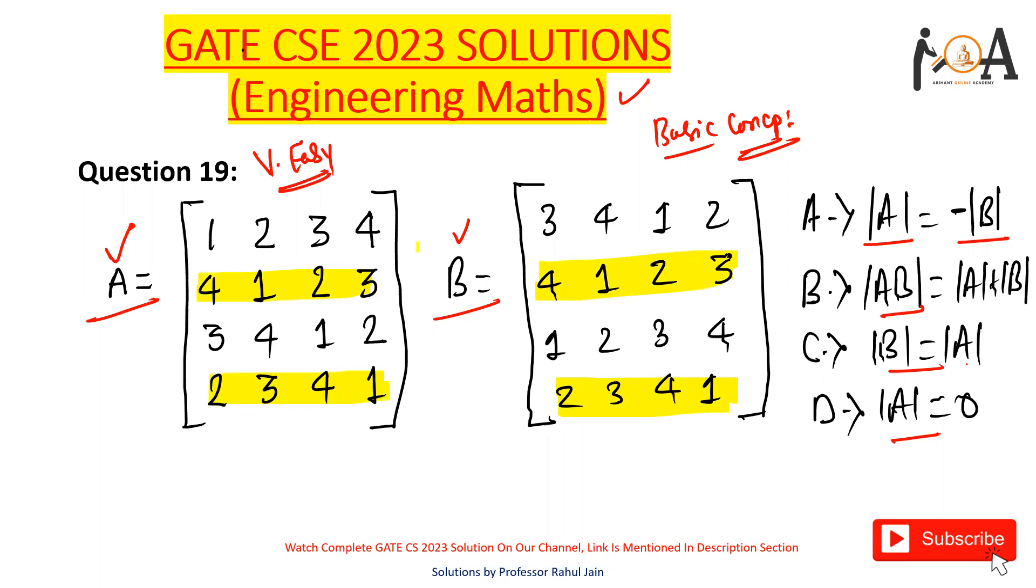Now, if you see the first row here in matrix A and the third row of matrix B, and if you see the third row of matrix A and first row of matrix B, you can identify some kind of relationship between them.